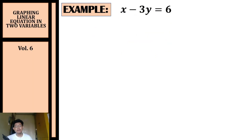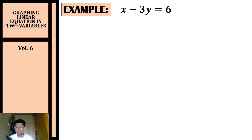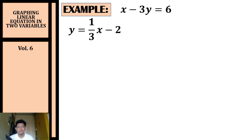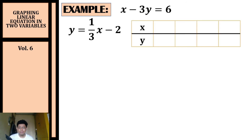Let's have another example. We're going to graph x minus three y equals six. Step one is to rewrite this in slope-intercept form, giving us y equals one-third x minus two. Step two is to prepare our table of values.